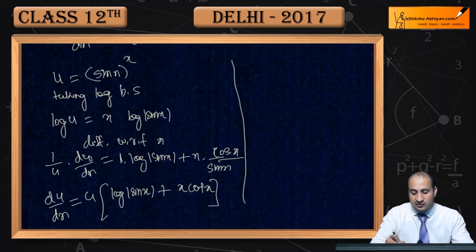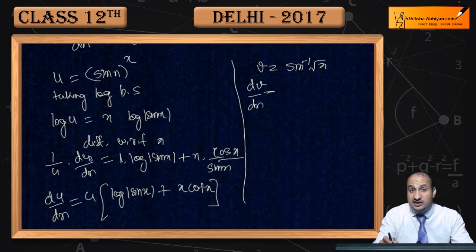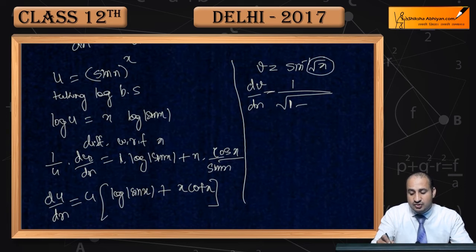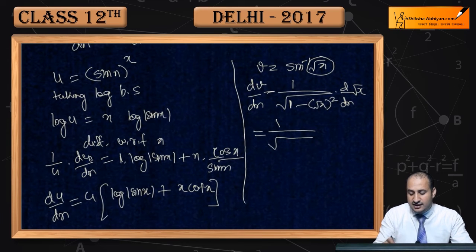Next aapko jo diya tha: v = sin⁻¹(√x). Ab yahan pe dv/dx kitna ho jayega? Differentiate karenge with respect to x. Sin inverse x ka derivative hota hai 1 / √(1 − x²). Yahan x ki jagah √x hai, to (√x)² andar aayega, into d/dx of √x. Neeche 1 minus (√x)² = 1 − x ho jayega.